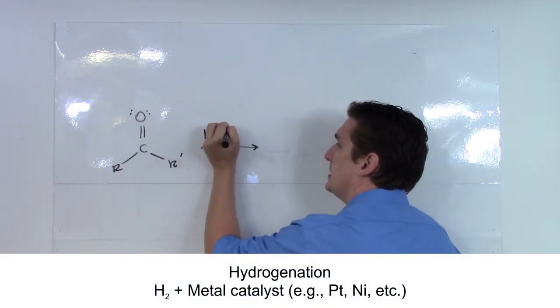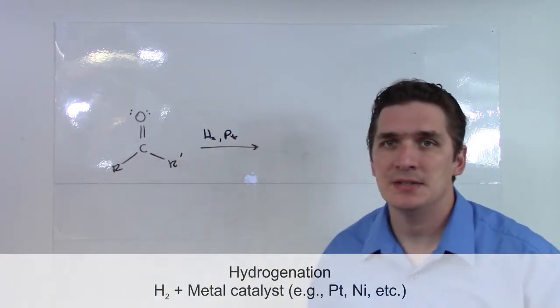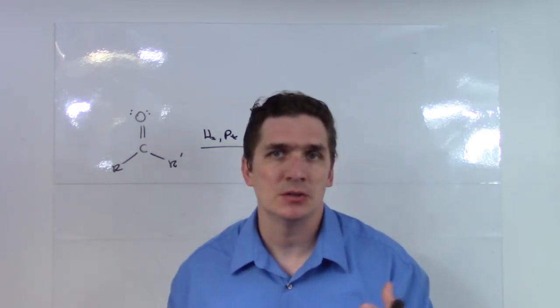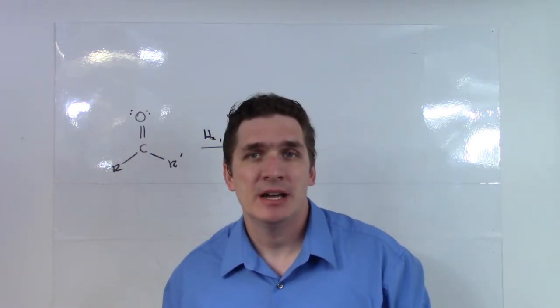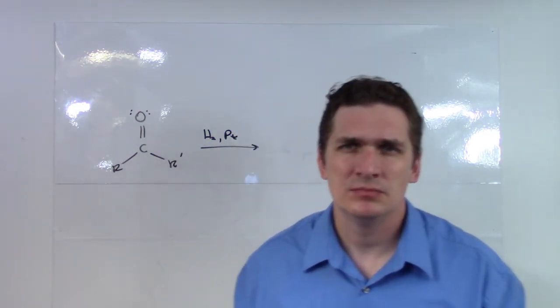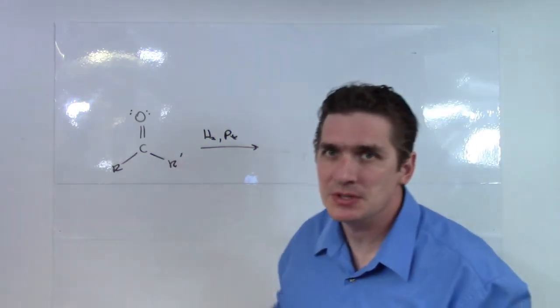So we have H2 on top of a metal catalyst, something like Pt, or we have something like Raney nickel. Basically a metal catalyst to give us the dissociation of hydrogen to further react with this compound.